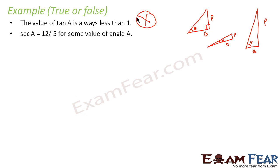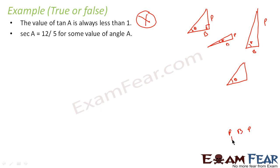Second statement: sec A equals 12 by 5 for some angle A. Let us draw a triangle with theta. Using the formula, sec theta equals H divided by B. So if H equals 12 and B equals 5, we need to check if a valid triangle exists.